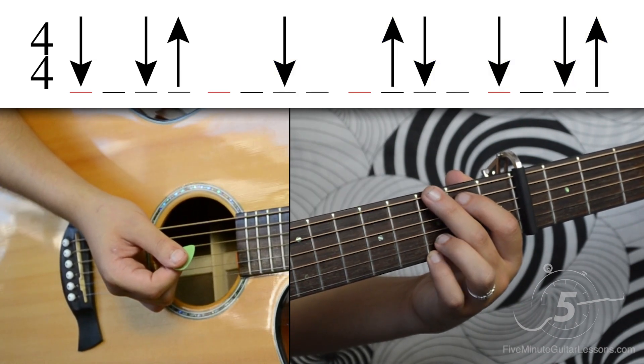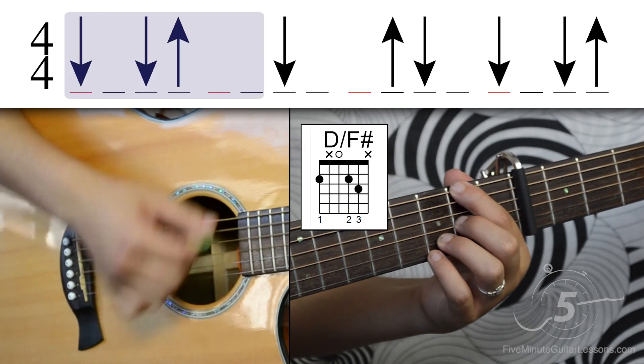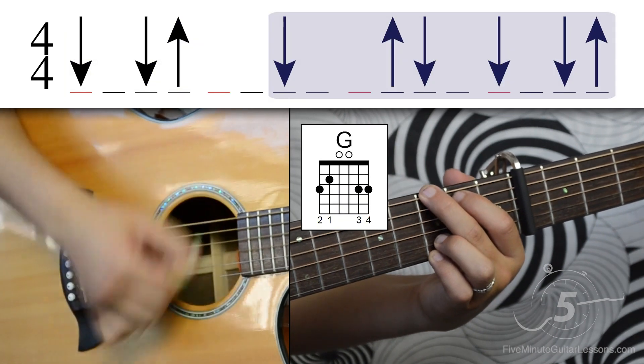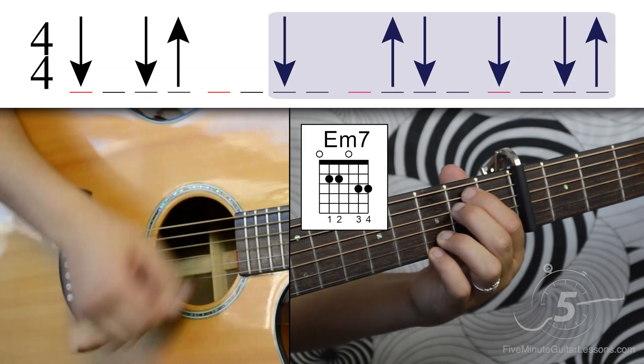And then when you put that together, you get D, G, D, E minor. Now let's try that with the chords from the verse.